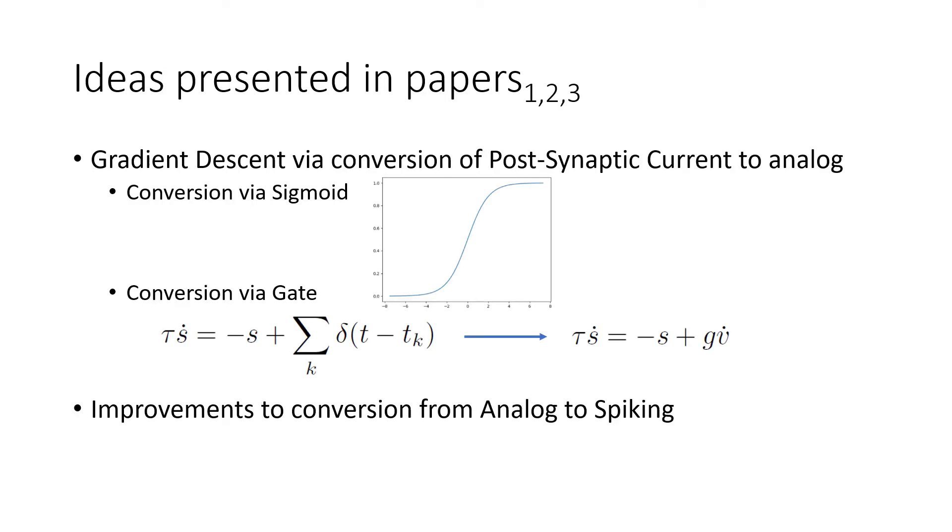We're going to briefly look at the ideas presented in the papers that I read. Two of them had ideas to actually perform gradient descent by converting this kind of impulse function for a spike into an analog output. One of them was via a sigmoid. So this is the function for a spike and then it gets repeated down here based on a window.